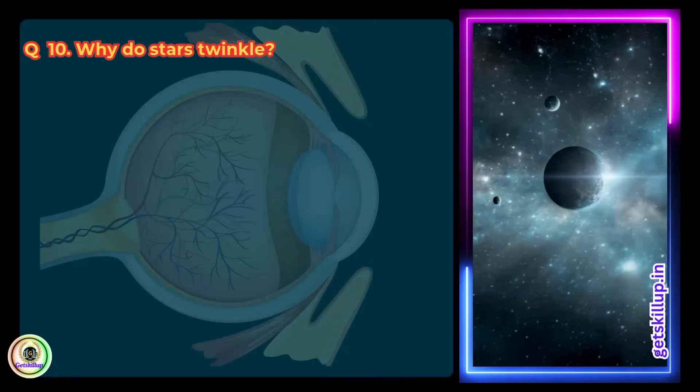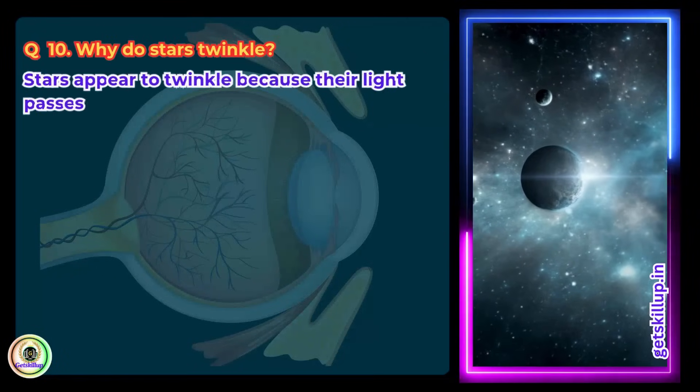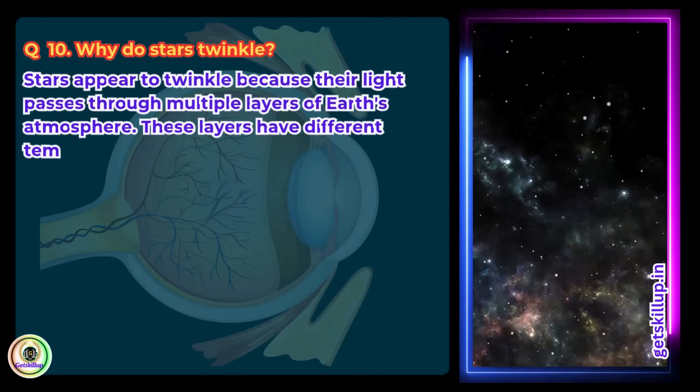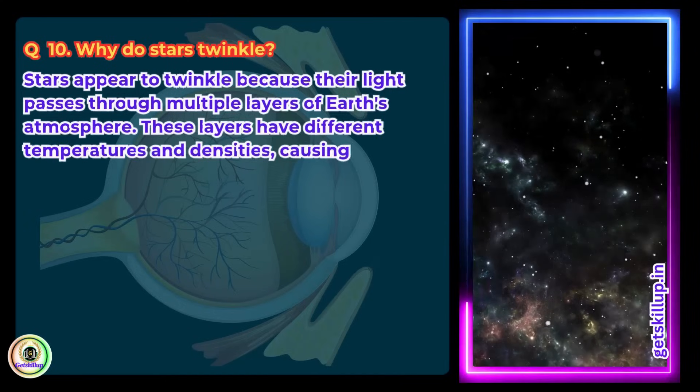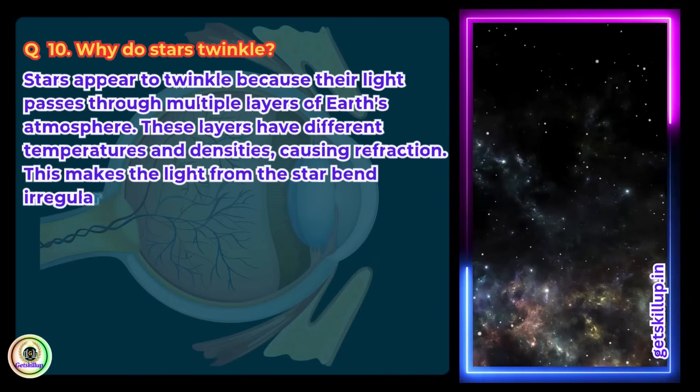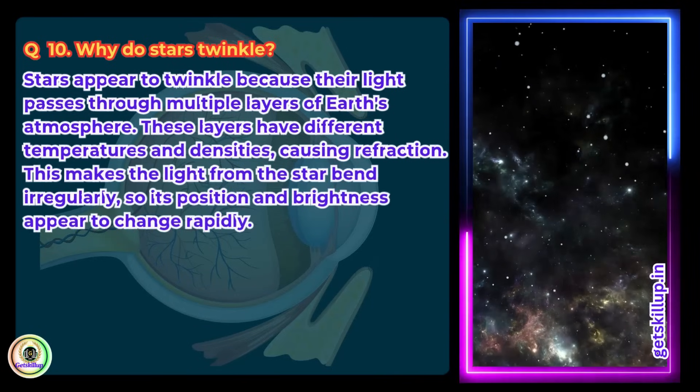Question 10. Why do stars twinkle? Answer: Stars appear to twinkle because their light passes through multiple layers of Earth's atmosphere. These layers have different temperatures and densities, causing refraction. This makes the light from the star bend irregularly, so its position and brightness appear to change rapidly.